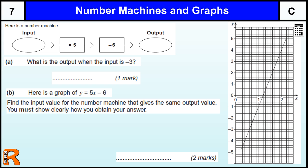That's a long-winded way of saying you've got different forms of how a problem is represented. So here we have a number machine where your input is times by 5 and then you take away 6 to get your output.